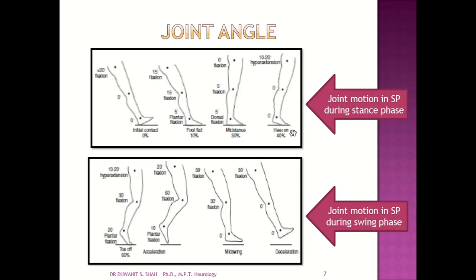Looking at joint angles in the sagittal plane during the stance phase: at initial contact, there is 0 degrees at the ankle, and approximately 20 degrees of hip flexion. At foot flat, there is 10 degrees of plantarflexion, 15 degrees of knee flexion, and 15 degrees of hip flexion. At mid-stance, 30 degrees of dorsiflexion occurs at the ankle, 5 degrees of knee flexion, and 0 degrees of hip movement.